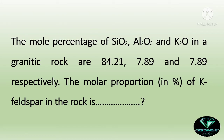Welcome to the online platform of Concepts of Geology. We are meeting again after a long time and hoping that you are doing well. Today's class is on demand and today we learn to solve a problem of geochemistry. The problem: the mole percentage of SiO2, Al2O3, and K2O in a granitic rock are 84.21, 7.89, and 7.89 respectively. The molar proportion in percentage of K-feldspar in the rock will be how much? This problem is taken from the IIT JAM examination.